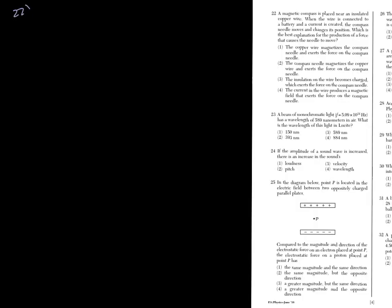Number 22, we're talking about magnetism. So we're looking at the best explanation for the production of a force that causes the needle to move. So magnetic compasses, think magnetic forces and magnetic fields. So once again, magnetic fields need moving charges or currents. So the reason why it started to move when you turned on the circuit is because, if you look at each of these choices, it's got to be choice four. The current in the wire produces magnetic field that exerts a force on the compass needle. It's the only one that follows our definition for magnetic fields.